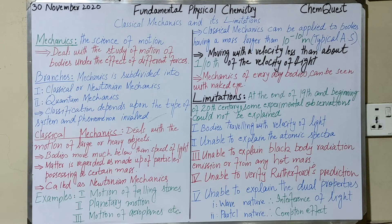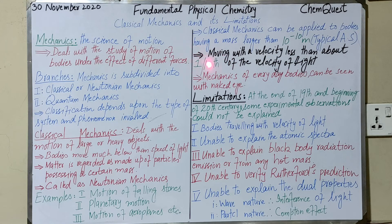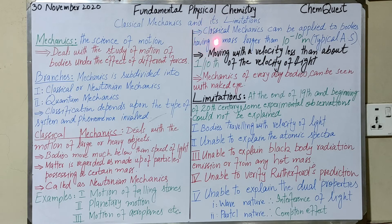Classical mechanics can be applied to an object whose velocity is at least 10 times less than the velocity of light — that is, less than about one-tenth of the velocity of light. So the two conditions are: the object size must not be smaller than 10 raise to power minus 10 meters (typical atomic size), and the velocity must be less than one-tenth of the speed of light.